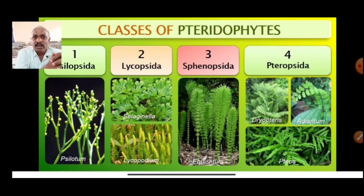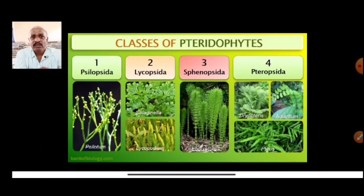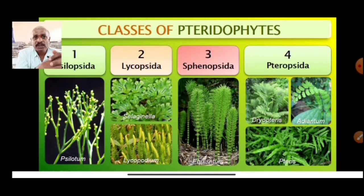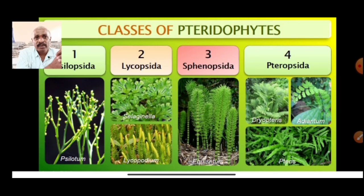Pteridophytes are classified into four groups: Psilopsida, Lycopsida, Sphenopsida, and Pteropsida. These are the four different classes we see within the pteridophytes.